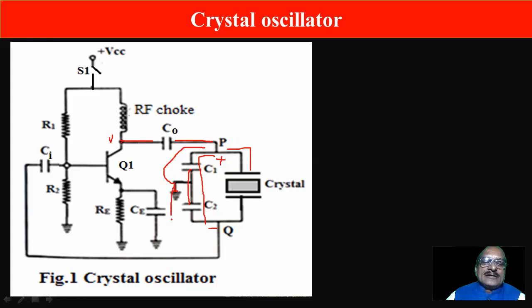And on the downside you find the phase is negative. So there is a phase difference of 180 degrees between point P and Q. And when this voltage developed across C2 is given back to the base of the transistor...